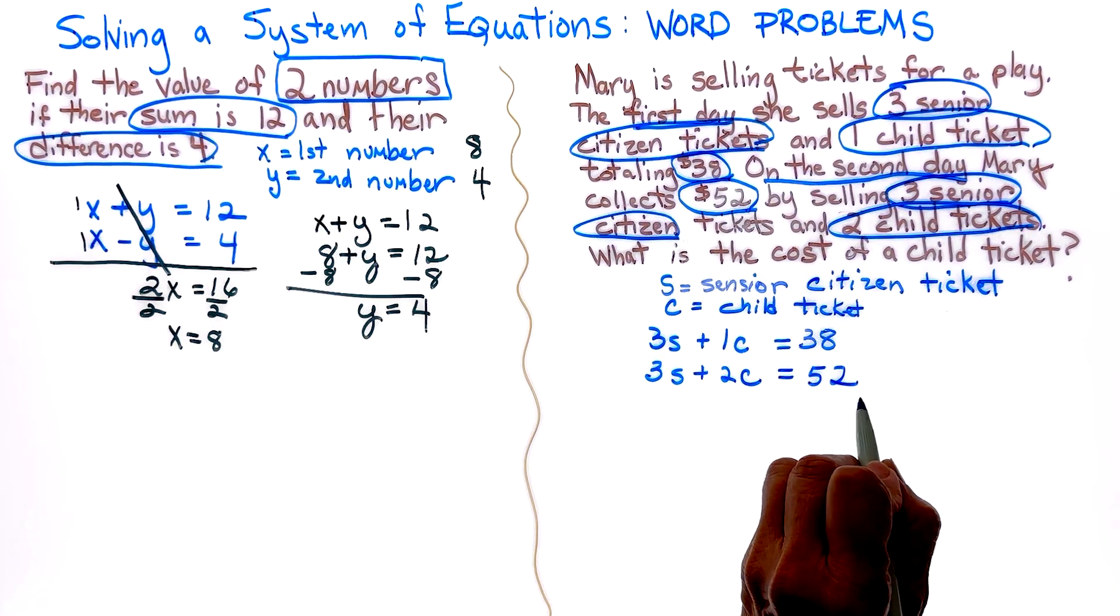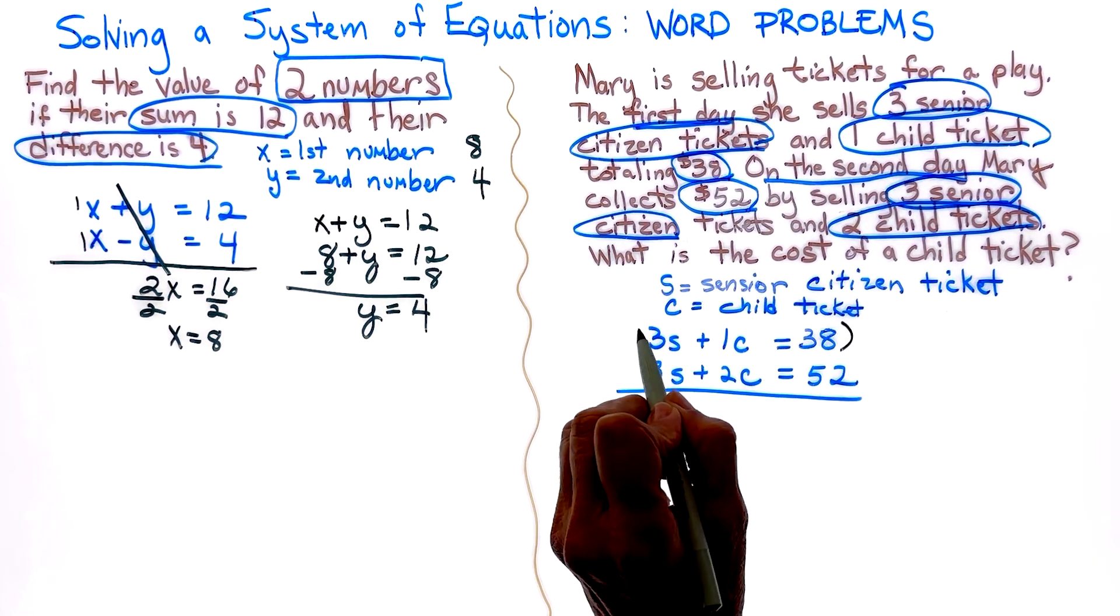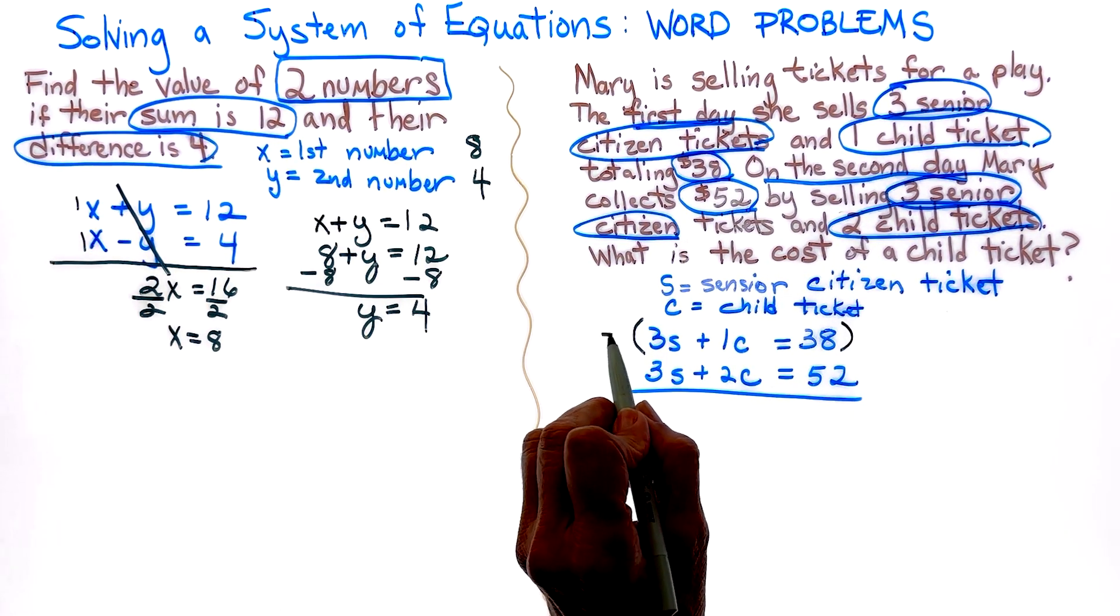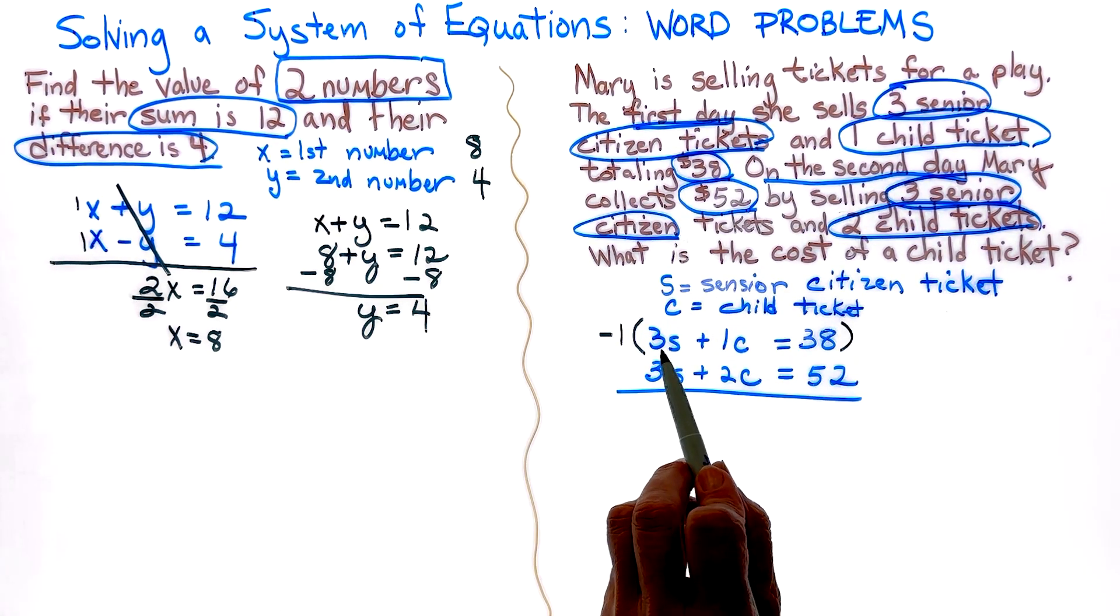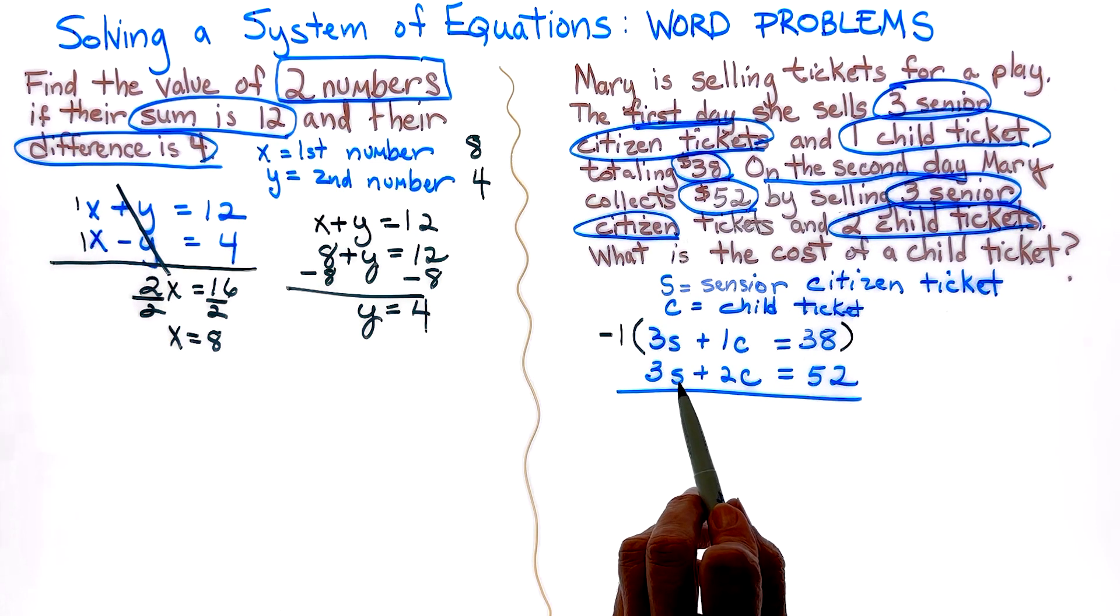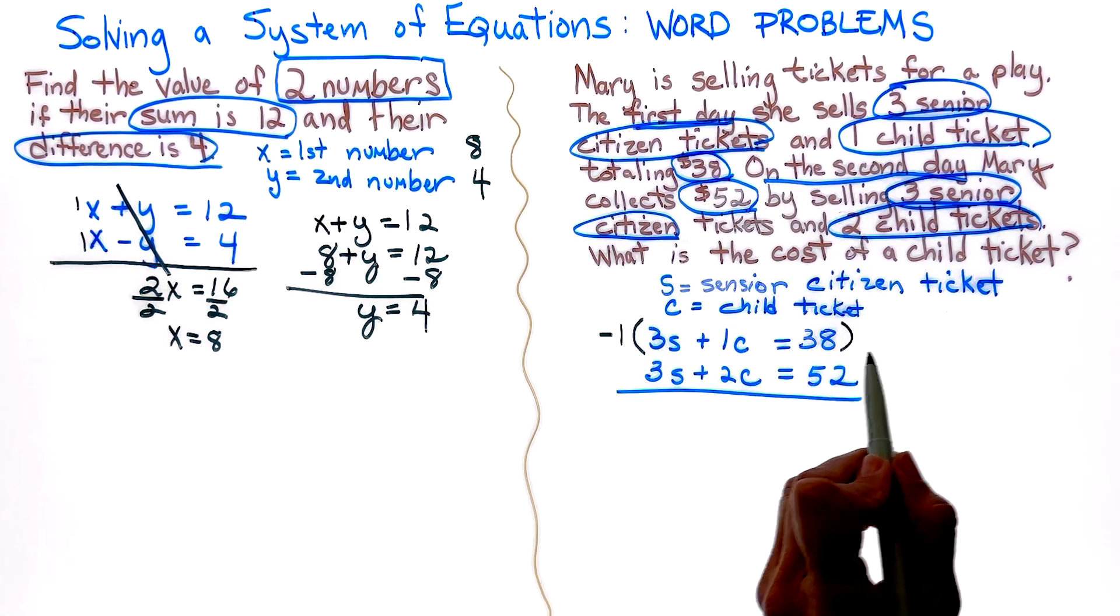So as I'm looking at this system of equations, I don't see, and I could solve by substitution, but I think I'm going to solve by elimination. You can do it either way. So for this problem, I am going to go ahead and I'm going to multiply the top by a negative one. And when I do that, I will have a negative 3S and a 3S. So there's my pair of opposites and I'll be able to find the child ticket immediately. So let's do that multiplication.